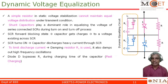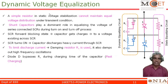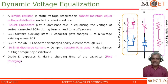This circuit is what I call a dynamic voltage equalization circuit, and what we have seen already is the static voltage equalization circuit. A simple resistor cannot maintain equal voltage distribution under transient conditions. Shunt capacitors play a vital role in maintaining the voltage across the SCR equal during the transient conditions, that is turn on and turn off time.